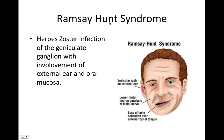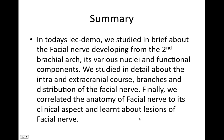Ramsay-Hunt syndrome is a herpes zoster infection of the geniculate ganglion with involvement of the external ear and oral mucosa. It produces a vesicular rash causing lower motor neuron paralysis of the facial nerve, along with loss of taste sensation over the anterior two-thirds of the tongue due to involvement of the chorda tympani nerve.